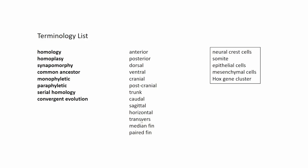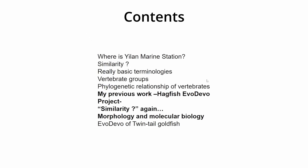Serial homology will be covered later in this presentation or the next part. And anatomical directional terms — anterior, posterior, dorsal, ventral, cranial, postcranial, trunk, caudal, sagittal, horizontal, transverse — I think you are okay with those.